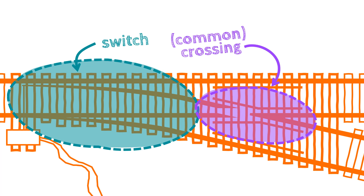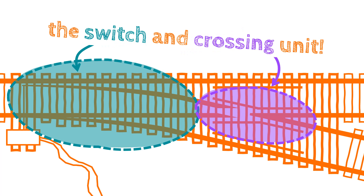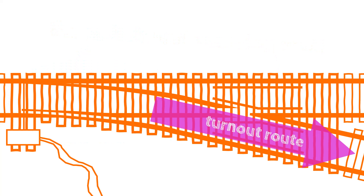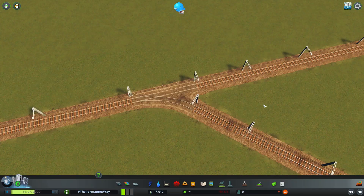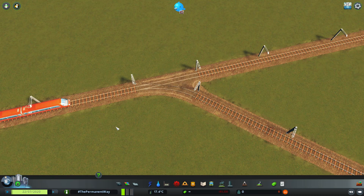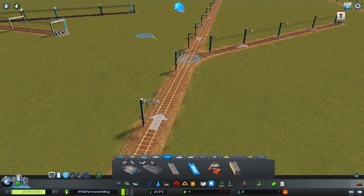Switches, turnouts, or points are the means by which tracks diverge and converge, whilst crossings permit the intersection of tracks at the same level. Combine the switch and crossing and you get a switch and crossing unit. These S&C units must be able to be traversed in both directions. The normally set direction, usually the straight or flatter radius track, is called the through route, and the switch direction is called the turnout route. In other words, the leg of the switch with the flatter radius is the through route, and the leg with the tighter radius is the turnout route.